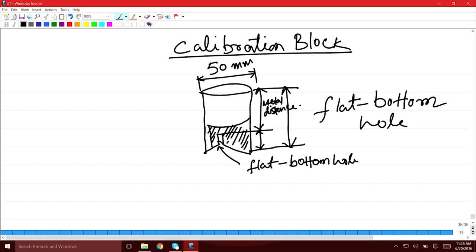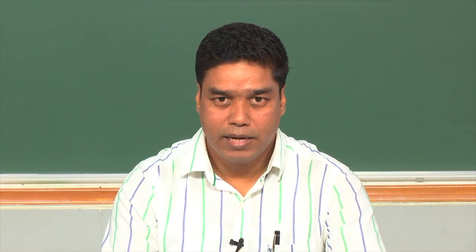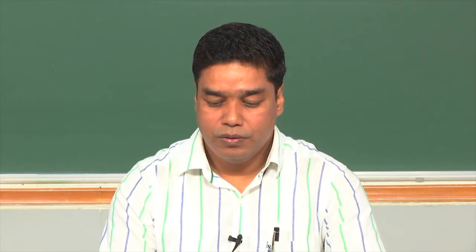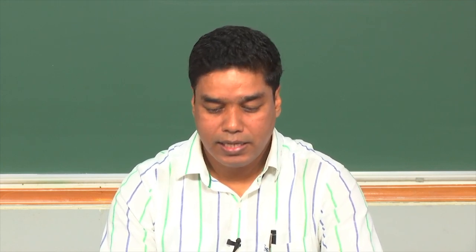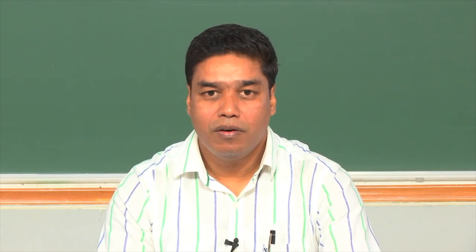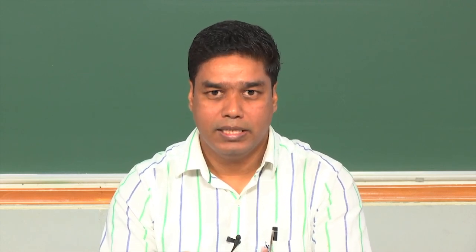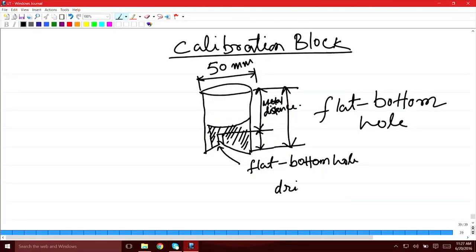In the case of distance amplitude calibration, the metal distance is varied and the size of the hole is kept constant. On the other hand, when you calibrate the area, the metal distance is kept constant and the size or area of the hole is varied. By varying the metal distance and varying the size of the hole you can calibrate the distance and the area respectively. The hole is drilled precisely in the center of the bottom surface of the cylinder.